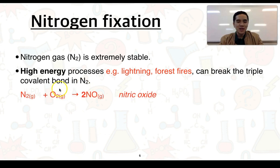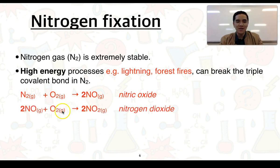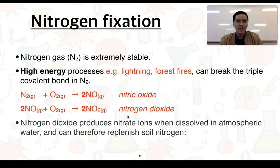When this occurs, nitrogen undergoes oxidation — it reacts with oxygen and produces nitric oxide (NO). This may look familiar from our work in topic 1.2 on photochemical smog. This NO can further react with oxygen, further oxidizing to form NO₂, which is nitrogen dioxide. Nitrogen dioxide in the air can then react with water to produce nitrate ions dissolved in atmospheric water, which can reach our soils through rainfall and act to replenish soil nitrogen.